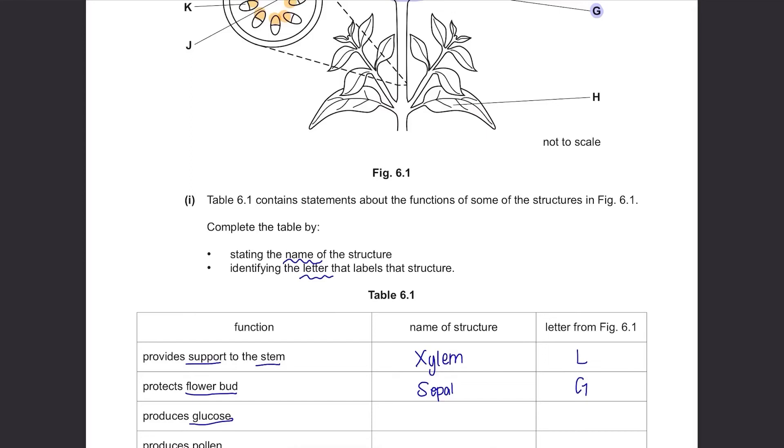Produces glucose. Glucose is a product of photosynthesis and photosynthesis occurs in leaves. So glucose is produced at H, the leaves.